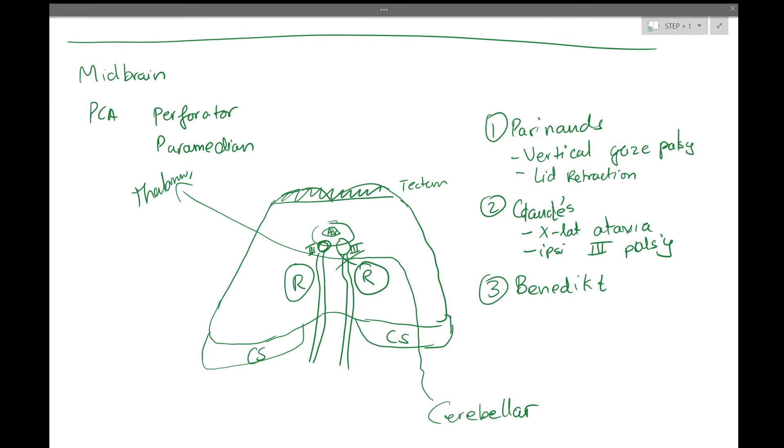And this is not just generally vertical gaze, because cranial nerve three could be one or multiple muscles that it feeds. Now Benedict's is going to involve all of these things. So ataxia from the cerebellar fibers, ipsilateral three palsy. And then because the red nucleus is knocked out, you also lose some contralateral motor.